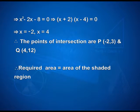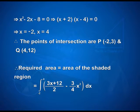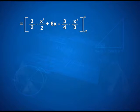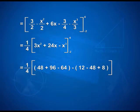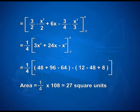Therefore, the required area equals the integral from -2 to 4 of [(3x plus 12)/2 minus (3/4)x squared] dx, that is equal to [3x squared/4 plus 6x minus x cubed/4] with limits -2 and 4, giving (1/4) into (3x squared plus 24x minus x cubed) with limits -2 and 4. On applying limits, we have (1/4) into (48 plus 96 minus 64 minus 12 minus 48 plus 8). Therefore, the required area is (1/4) into 108, that is 27 square units.